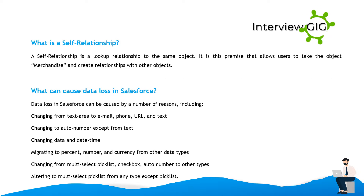What is a self-relationship? A self-relationship is a lookup relationship to the same object. It allows users to take an object like Merchandise and create relationships with other objects of the same type. What can cause data loss in Salesforce? Data loss in Salesforce can be caused by changing from Text Area to Email, Phone, URL, and Text; changing to Auto Number except from Text; and changing data and datetime formats, or migrating to Percent, Number, and Currency from other data types.